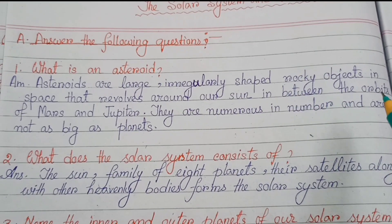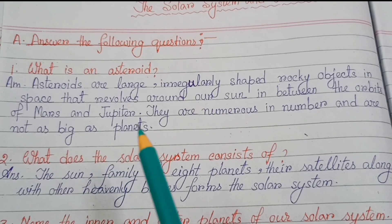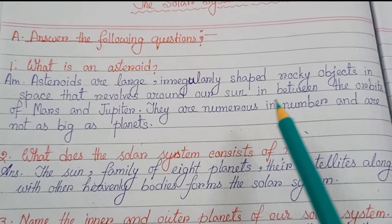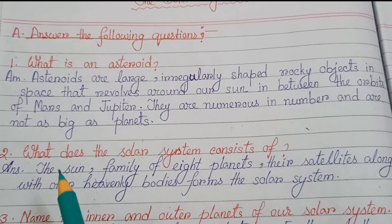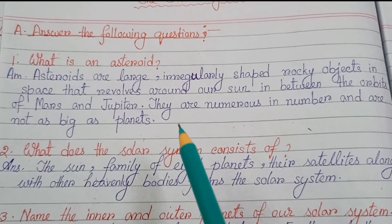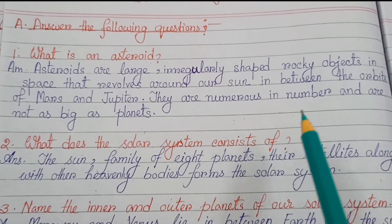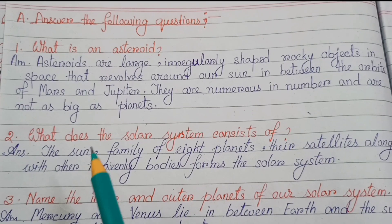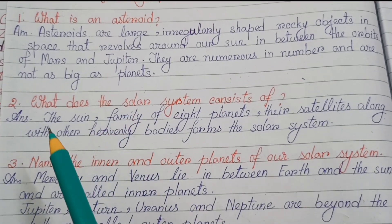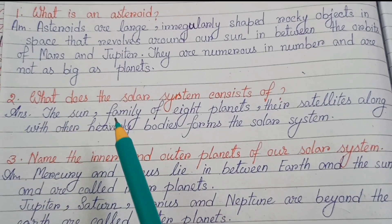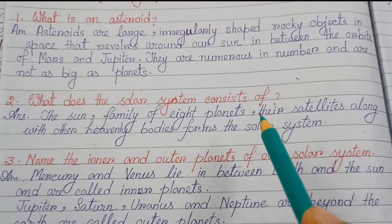Now it's time to solve the question answers. Number one: What is an asteroid? Asteroids are large, irregularly shaped rocky objects in space that revolve around our sun in between the orbits of Mars and Jupiter. They are numerous in number and are not as big as planets.